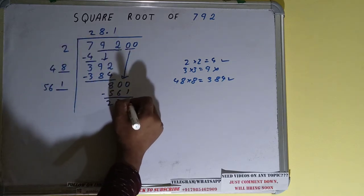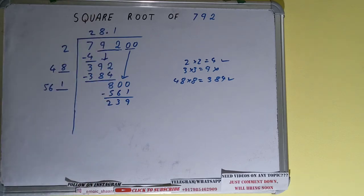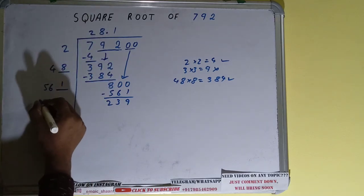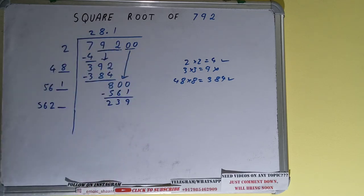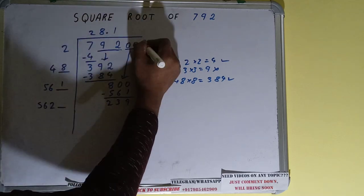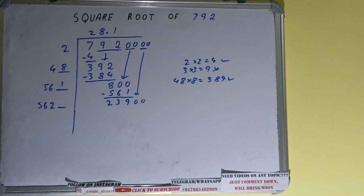239 will be left. Now 561 into 1 with it, so add both. 561 plus 1 will be 562. Write it here and keep one digit extra. We need to make this number big, so bring the next pair of zeros down and it will be 23,900.